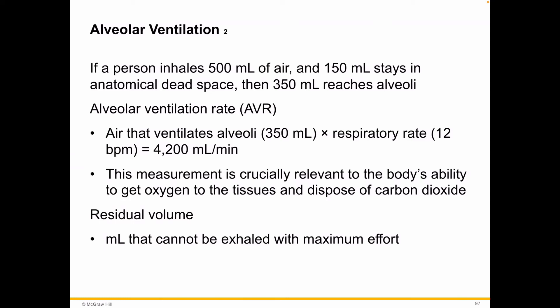That gives you around 4,000 milliliters per minute, which is a lot. This measurement is crucial when looking at the body's ability to oxygenate tissues and dispose of carbon dioxide — how fast is that turnover, how much volume is used to get fresh oxygen in and expel the appropriate amount of carbon dioxide to keep blood pH just right.